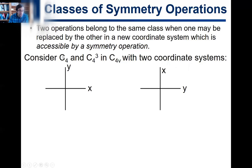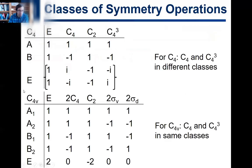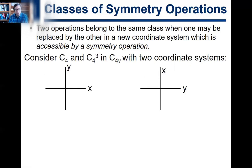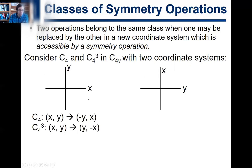We're going to check whether in C4v the C4 and C4³ operations are in the same class — we know from the character table that they are, so let's use this definition to confirm. We take the X and Y vectors — or equivalently any arbitrary XY point — and we see how the two different operations transform them.